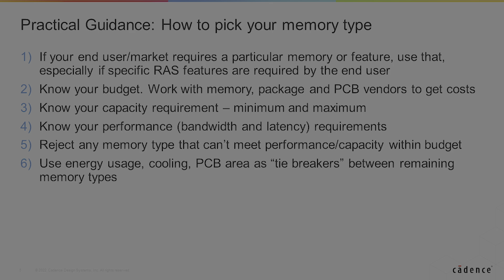The next thing is to know your capacity requirement, minimum and maximum — that will help guide your decision. Knowing the performance, both bandwidth and latency requirements, will also help guide your decision. If you've gotten this far and you're still down to more than one memory type, you can reject anything that doesn't meet performance or capacity requirements. Finally, if you're still between one or two memories at that last point, you look at things like energy usage, cooling, and PCB area as the tie-breakers between the final choices.